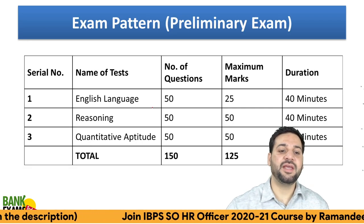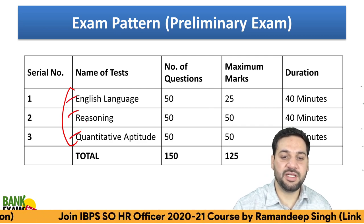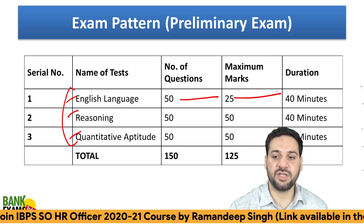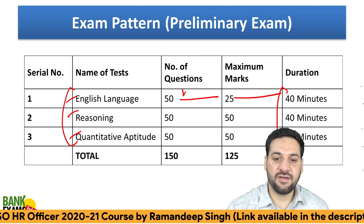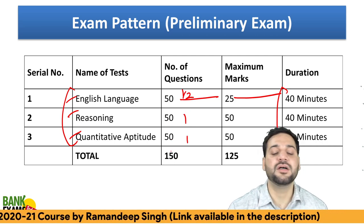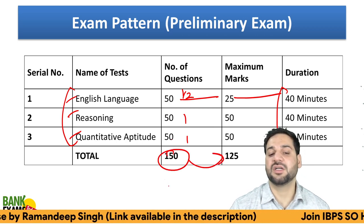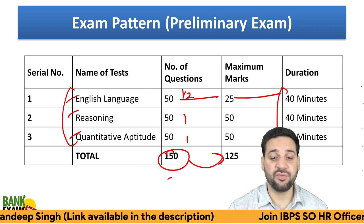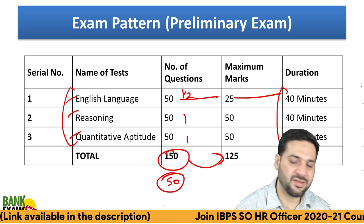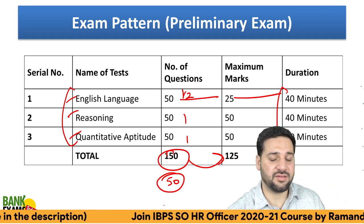For the pre-exam there are 3 sections: English Language, Reasoning Ability, and Quantitative Aptitude — 50 questions, 25 marks, 40 minutes each. Half a mark per question for English, and 1 mark each for Reasoning and Quant. Total: 150 questions, 125 marks. The cutoff is expected to be around 45 to 50.